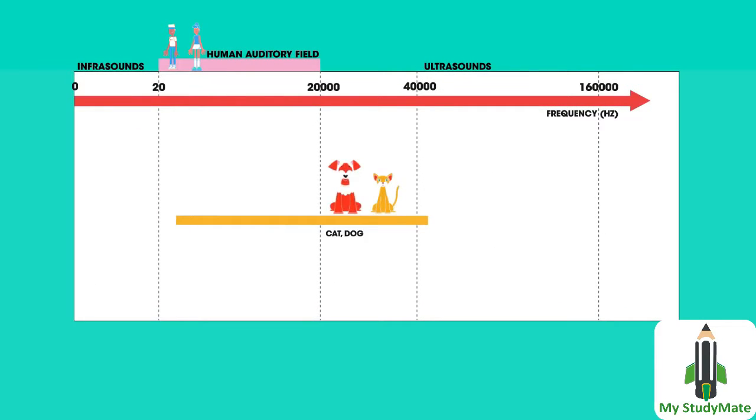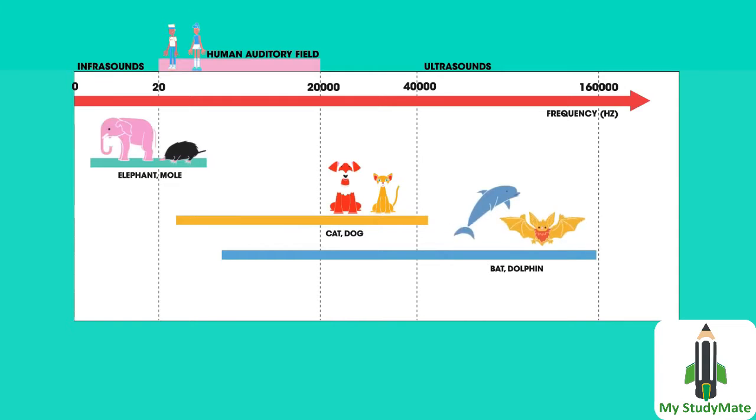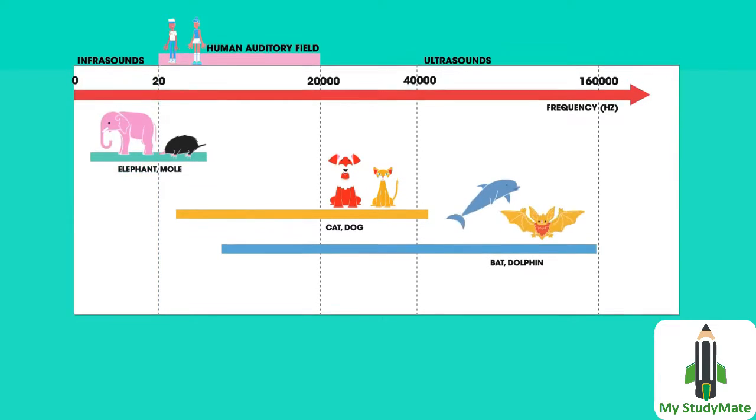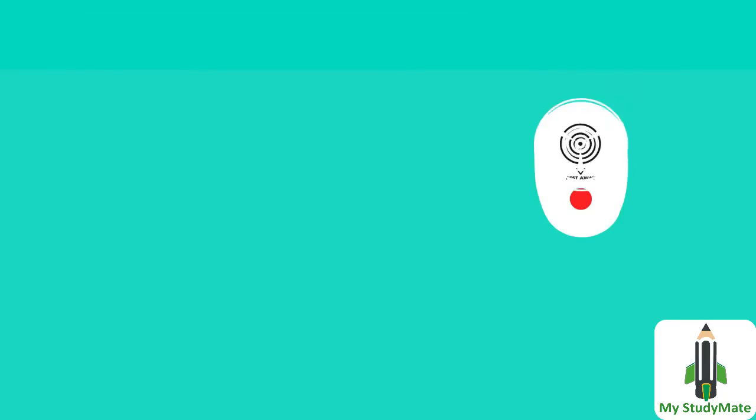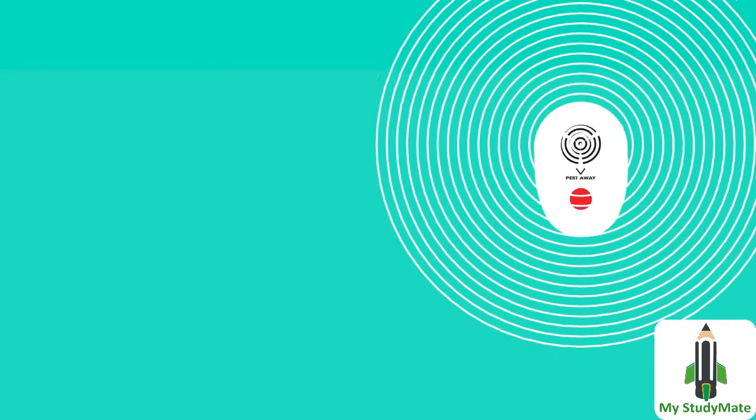So humans can hear some sounds that are too low in frequency for dogs, while dogs can hear some sounds that are too high in frequency for humans to hear. Other animals hear at other frequencies. Elephants with their huge ears can hear lower frequencies than we can.